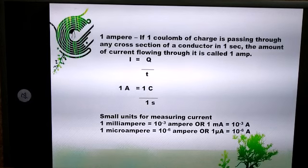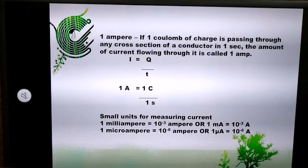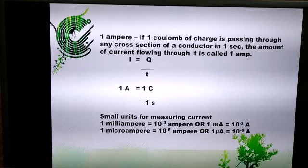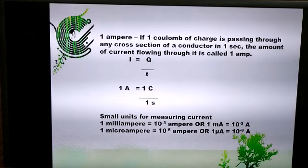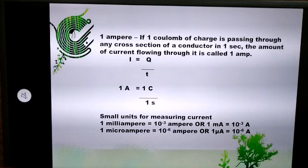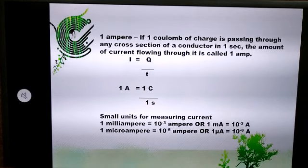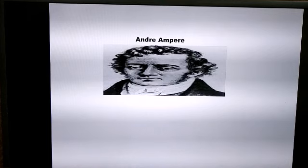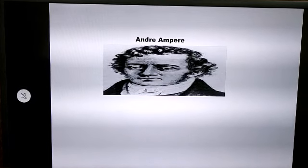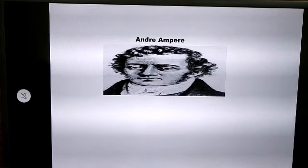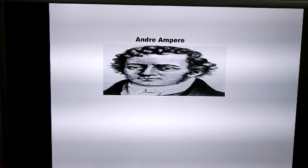I is equal to Q upon T. If I is 1 ampere, then the charge has to be 1 coulomb, and that 1 coulomb of charge has to flow through a cross-sectional area of a conductor in one second. So, 1 A equals 1 C upon 1 s. The unit of electric current is named after the French scientist André-Marie Ampère.